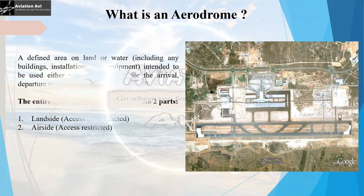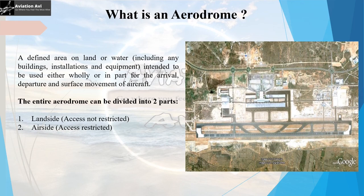First things first, let us understand what an aerodrome is. By definition, an aerodrome is a defined area, which can be on land or on water, intended to be used either wholly or in parts for the arrival, departure, and surface movement of aircraft. The entire aerodrome can be divided into two parts: the land side and the air side.